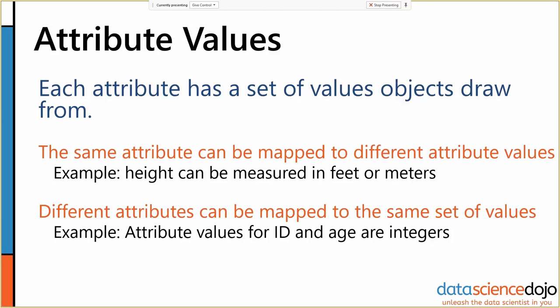The properties of attributes can differ — height and age have practical maximum and minimum values, while an ID number has no real limit. Who defines what value set a given attribute uses? Essentially, we do — the people who create the data set, or the APIs we call to get the data. We can also change our attributes to be mapped to different sets of values.